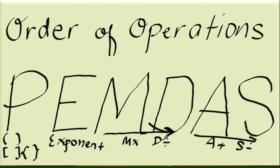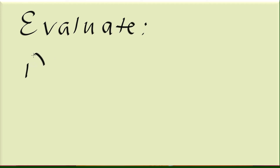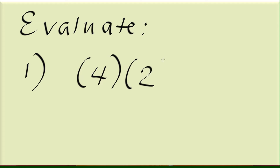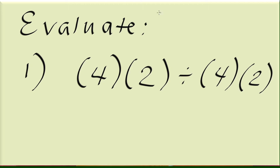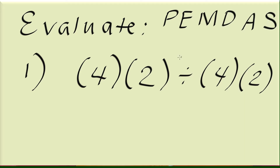They are of equal importance or precedence. This is the correct sequence of steps for evaluating a mathematical expression. So let's jump right into example one. Say we're asked to evaluate 4 times 2, divided by 4 times 2. Remember the order — PEMDAS. The operations that we see here are division and multiplication, and we see parentheses in this expression.